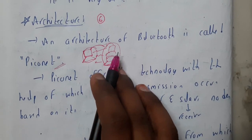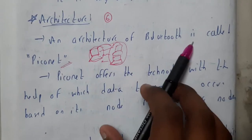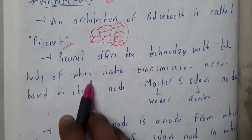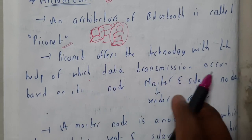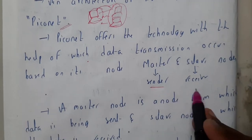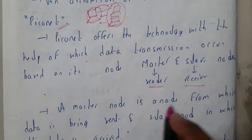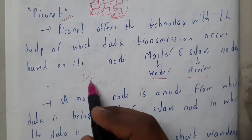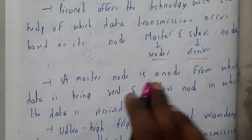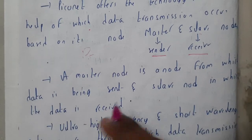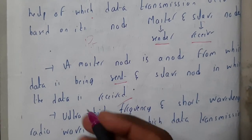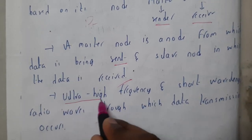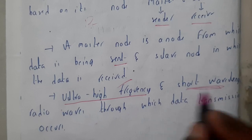An architecture of Bluetooth is also called as piconet. Piconet offers the technology with the help of which data transmission occurs between the master and slave. Master is nothing but the sender and slave is nothing but the receiver. We will be calling these blocks as systems or nodes. A master node is a node from which data is being sent, and a slave is a node for which the data is received. All the data here will be transferring through ultra high frequency and short wavelength radio waves, through which the data transmission occurs.